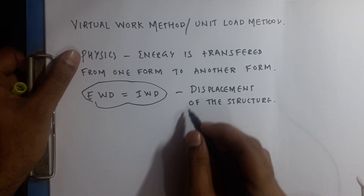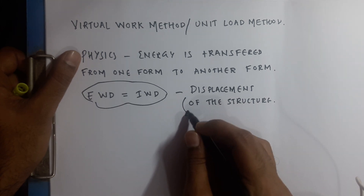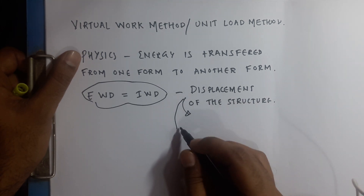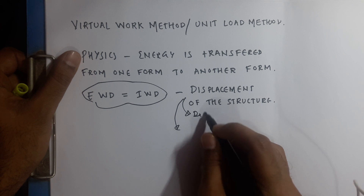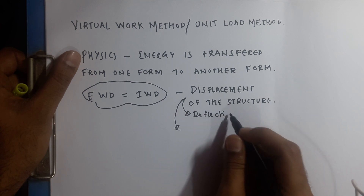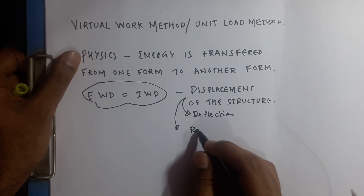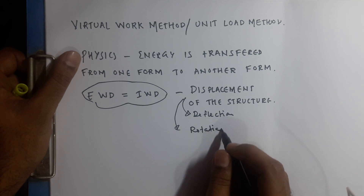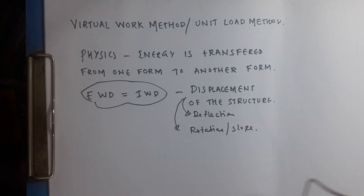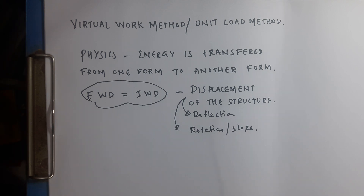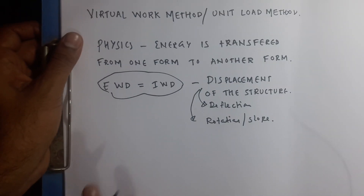Displacement is characterized into two parts: it may be deflection of the structure, or it may be rotation or slope of the structure. First we will understand the formula. To understand the formula, I will take a simple simply supported beam example.